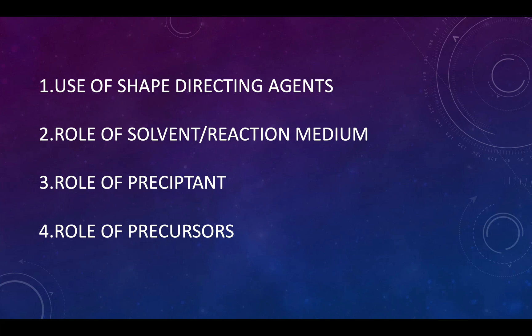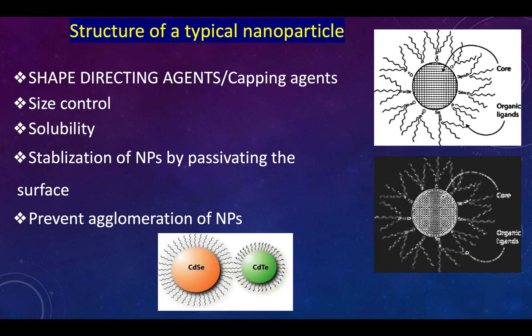Remember, whether you use a single-source or dual-source precursor matters greatly. Even using different salts — for example, to make lead sulfide, using lead nitrate, lead acetate, or lead chloride — each has a different effect. It is very crucial to decide which one to use and for what purpose. To understand the nanoparticle structure, we look at a figure: there is a central core, mostly crystalline, and an outer layer called the shell.